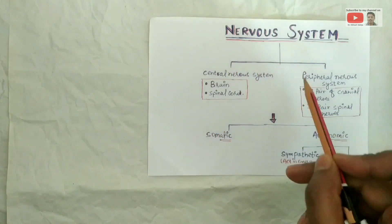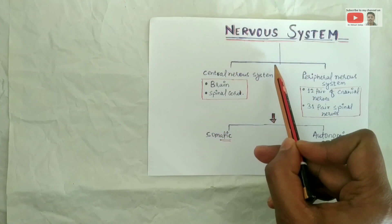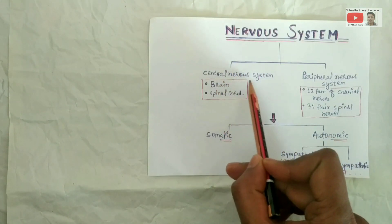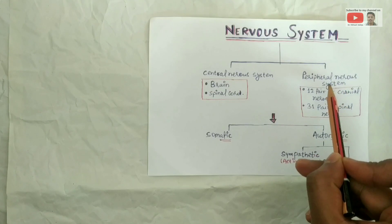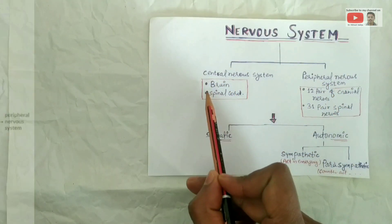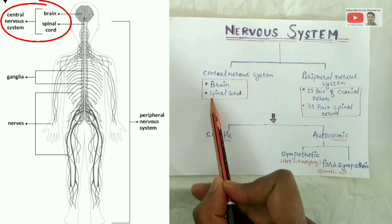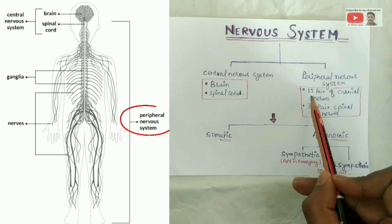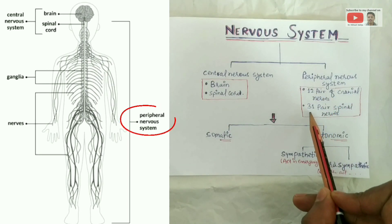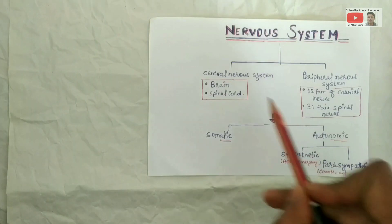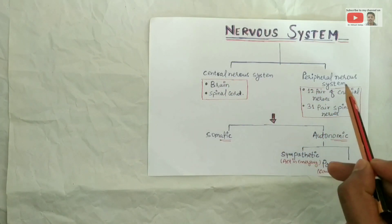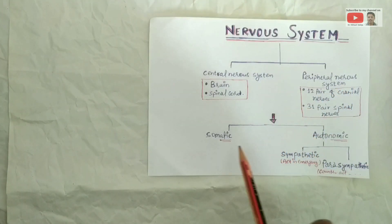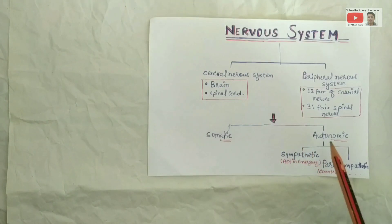The Nervous System is broadly divided into two parts: one is the Central Nervous System and another is the Peripheral Nervous System. The Central Nervous System comprises the Brain and the Spinal Cord. The Peripheral Nervous System comprises 12 pairs of Cranial Nerves and 31 pairs of Spinal Nerves. Along with this, both have two functional components: one is somatic and another is autonomic.